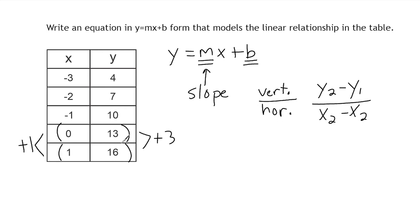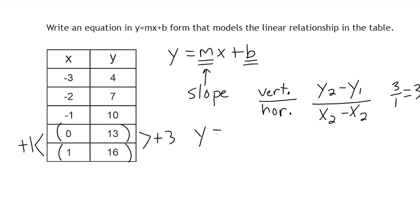If we subtract our second y minus first y, that gives us 3 — that's where y2 minus y1 comes from in the slope formula. And the second x minus first x gives us a difference of 1. So we replace m in the equation with a slope of 3 over 1. We should write slope in simplest form, so 3 over 1 equals 3. We substitute the variable m with 3, and leave y as y, x as x, and b as b for now.